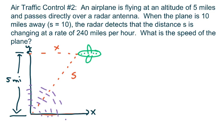Alright, anyway, when the plane is 10 miles out, so s equals 10, the radar detects the distance s is changing at a rate of 240 miles per hour. So what is the speed of the plane?